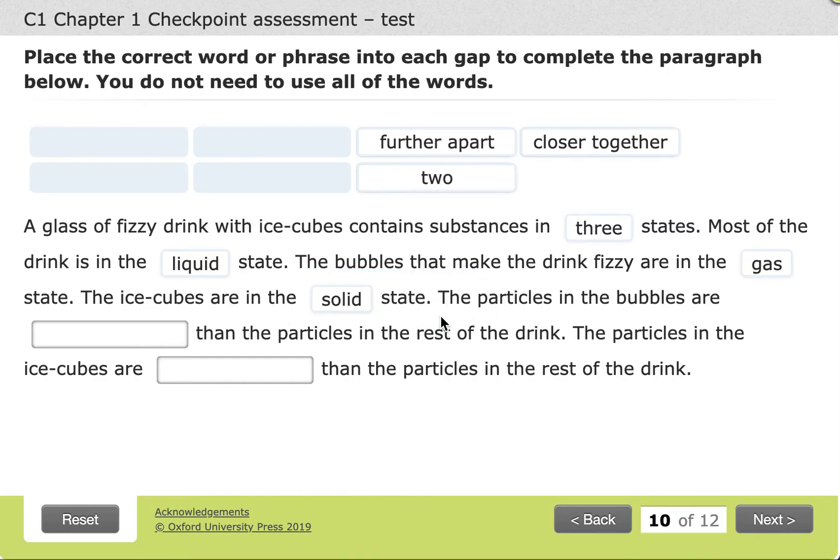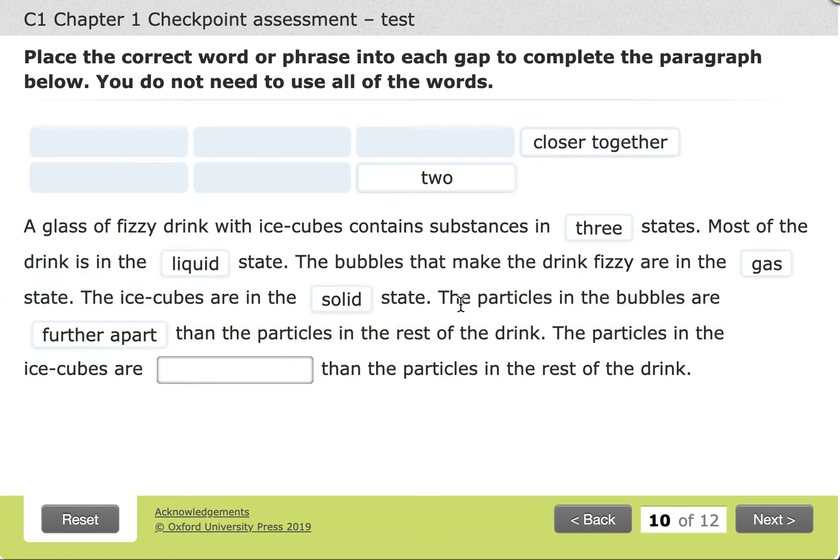We talked about ice being the solid state of water. The particles in the bubbles are gas, and so they are further apart than the particles in the rest of the drink, which are mainly liquid. The particles in ice cubes are closer together because we're in a solid state there.